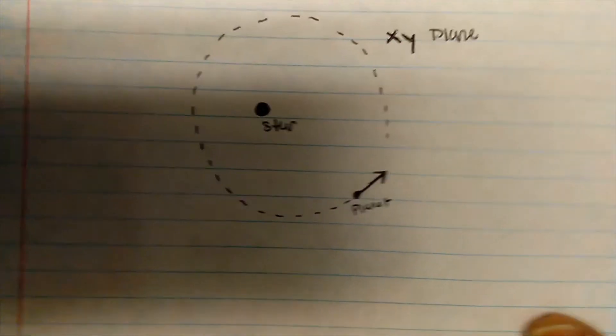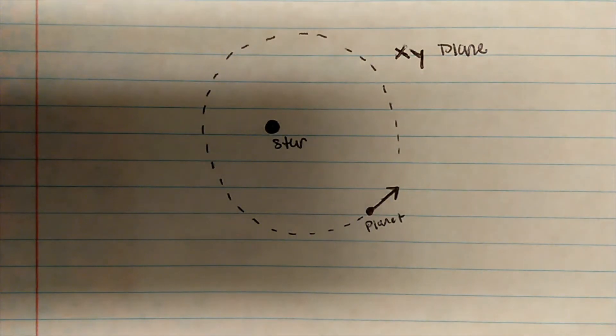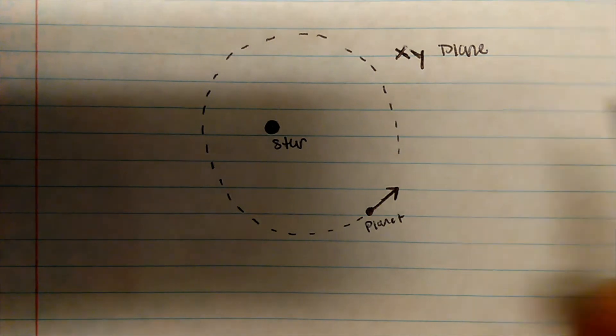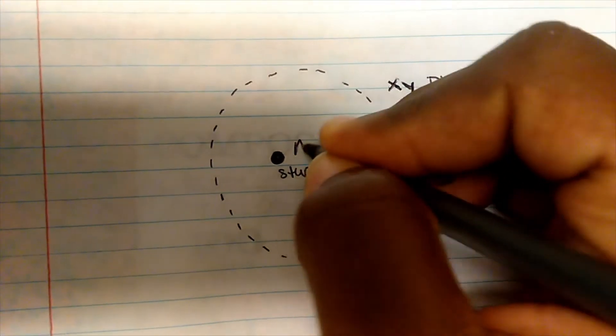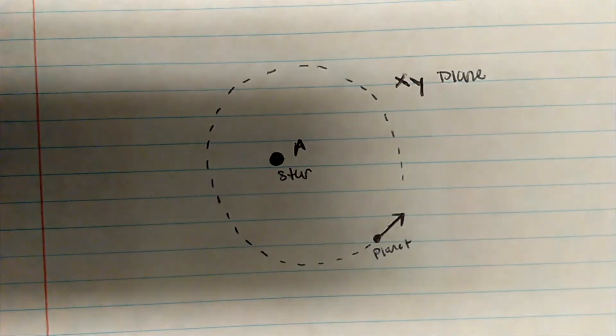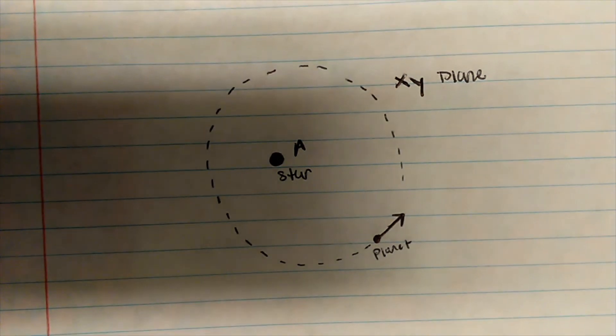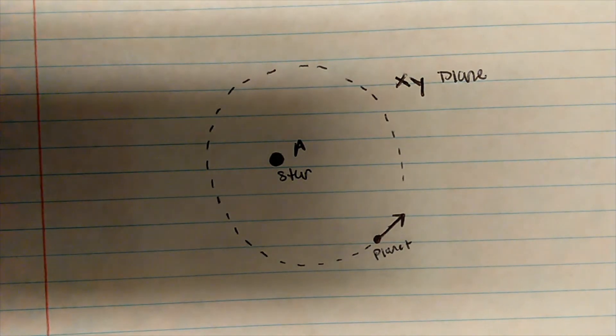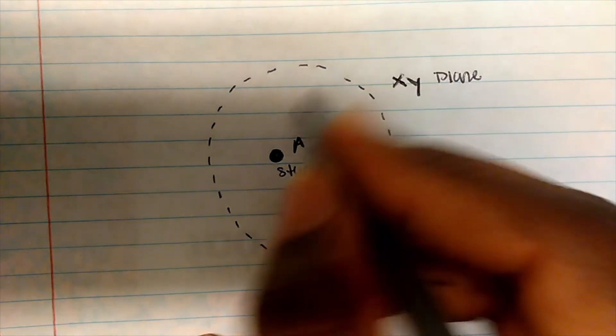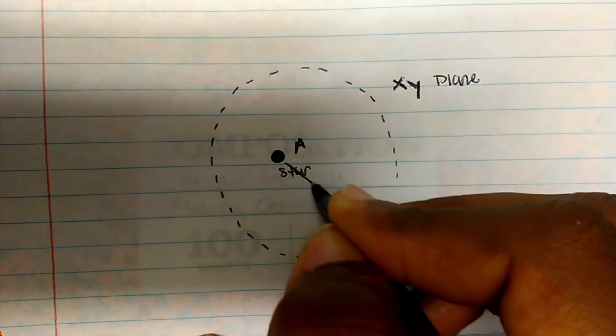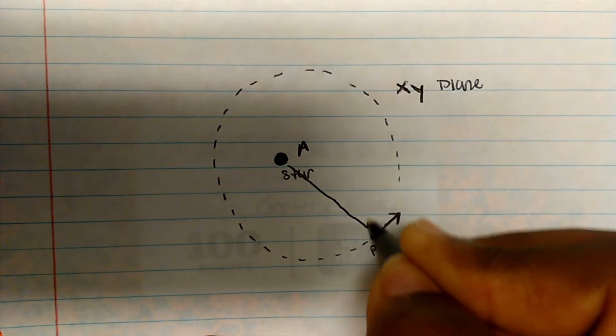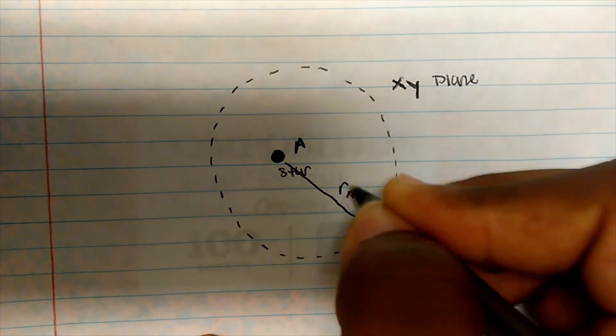And this is a good one last one. So again, we have a star. We have a planet as it orbits the star. They told us that it's in the XY plane. Maybe this is our location A. So what is the direction of the angular momentum with respect to location A? Well, I'm going to draw my arrow from A to the point. And that will be my RA.